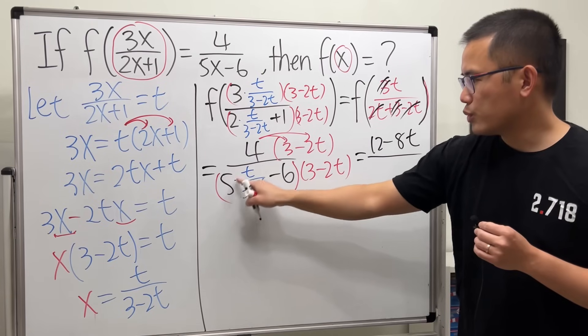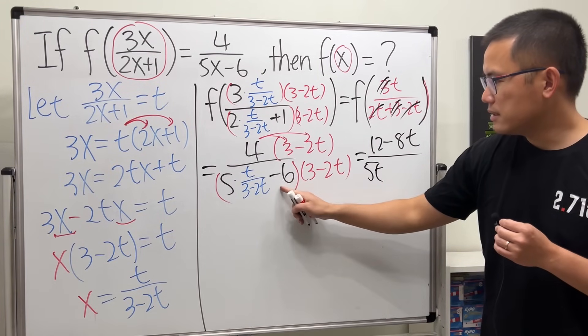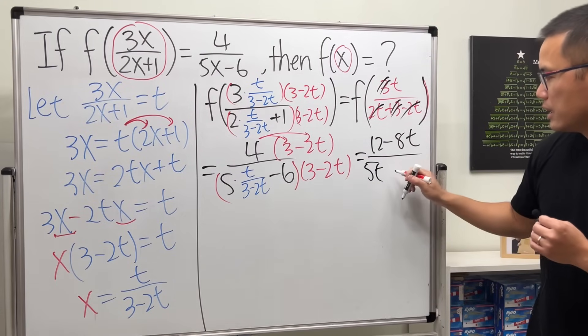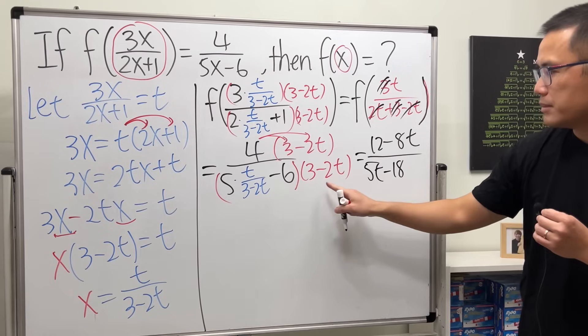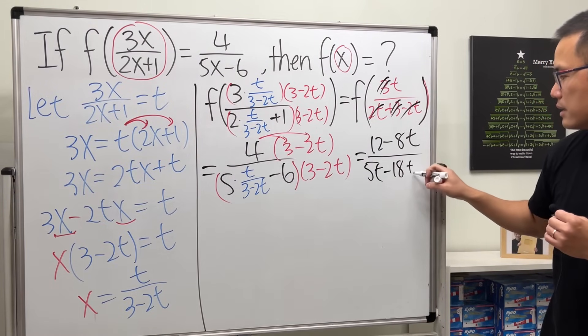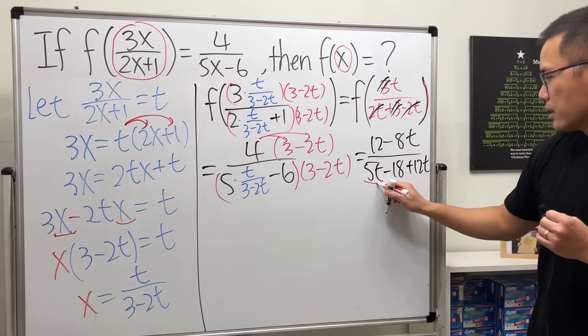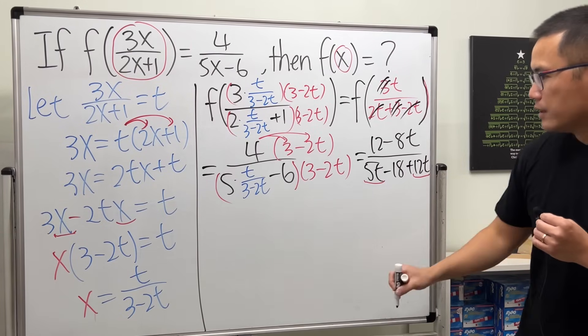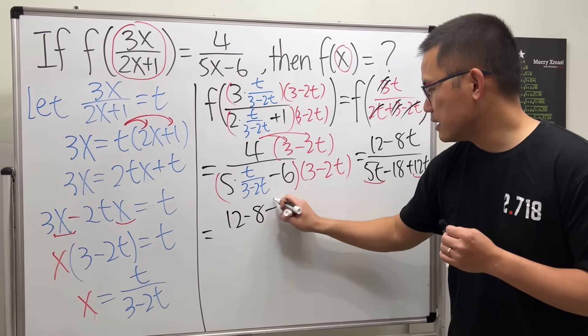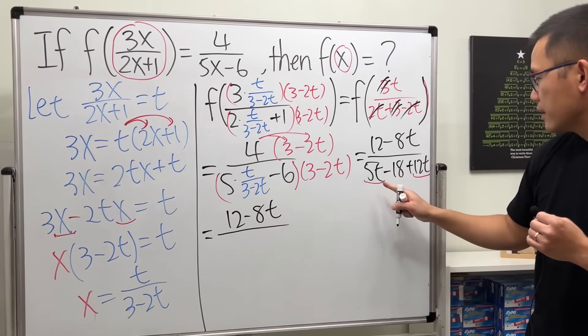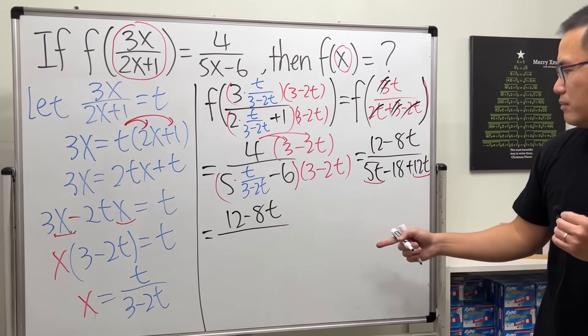This times that will cancel, so we will have 5t. Then we will take negative 6 times this, which is negative 18, and then negative 6 times negative 2t is plus 12t. Here we can combine this and that together, so we will get 12 minus 8t over—that is just 17t.